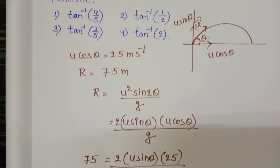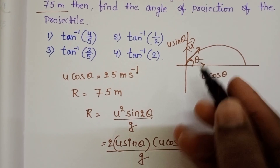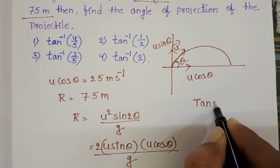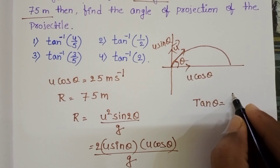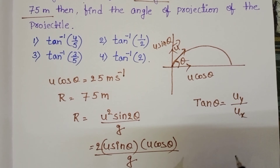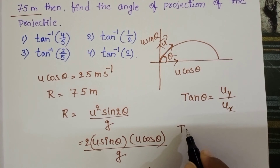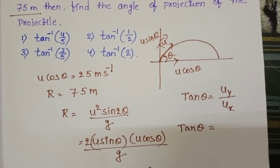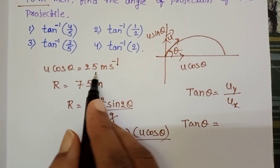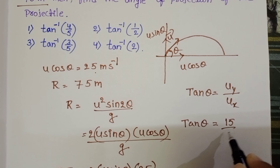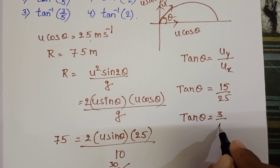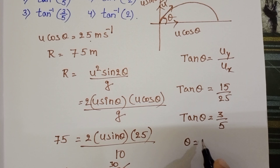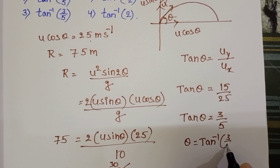Since the given options are in terms of tan, from the diagram tan θ equals the vertical component divided by the horizontal component, u_y by u_x. So tan θ equals 15 divided by 25, which gives tan θ = 3/5, and therefore θ = tan⁻¹(3/5).